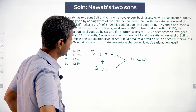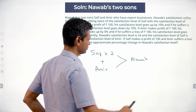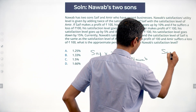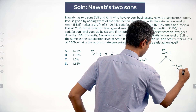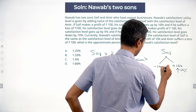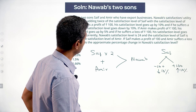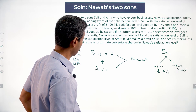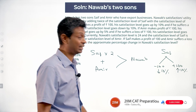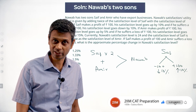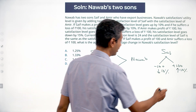Saif's satisfaction level goes up by 10% if he makes a profit of 100, and goes down by 10% if he suffers a loss of 100. If Ameer makes a profit of 100, his satisfaction goes up by 5%, and if he suffers a loss of 100, his satisfaction goes down by 15%. Ameer is obviously more miserable than Saif — Saif is plus 10, minus 10; Ameer is plus 5, minus 15. He takes his failures hard.